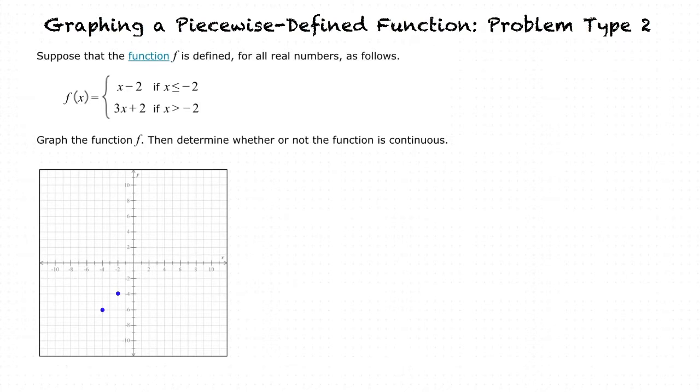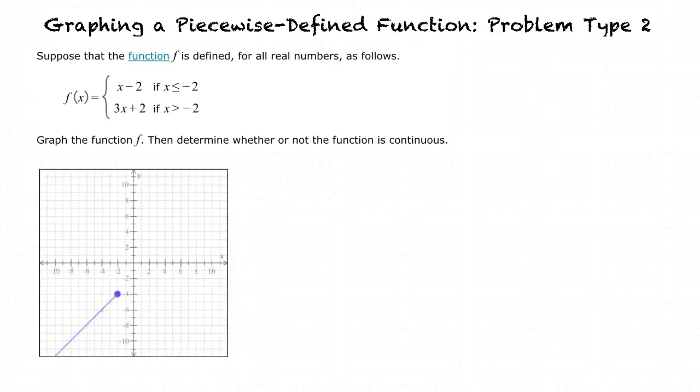When are we able to tell if the endpoint circle is closed? Whenever we have an equal sign in the domain, we know that we have a closed circle for the endpoint of the graph. Now that we have our two plot points, we can draw the line through the two points, making sure to keep it less than negative 2, and with a closed circle, since negative 2 is included in the domain of this piece of the function.